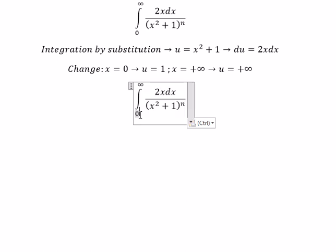We change 0 to 1. We change x to u. We change dx to du. And for this term, we can write u to the power of negative n.